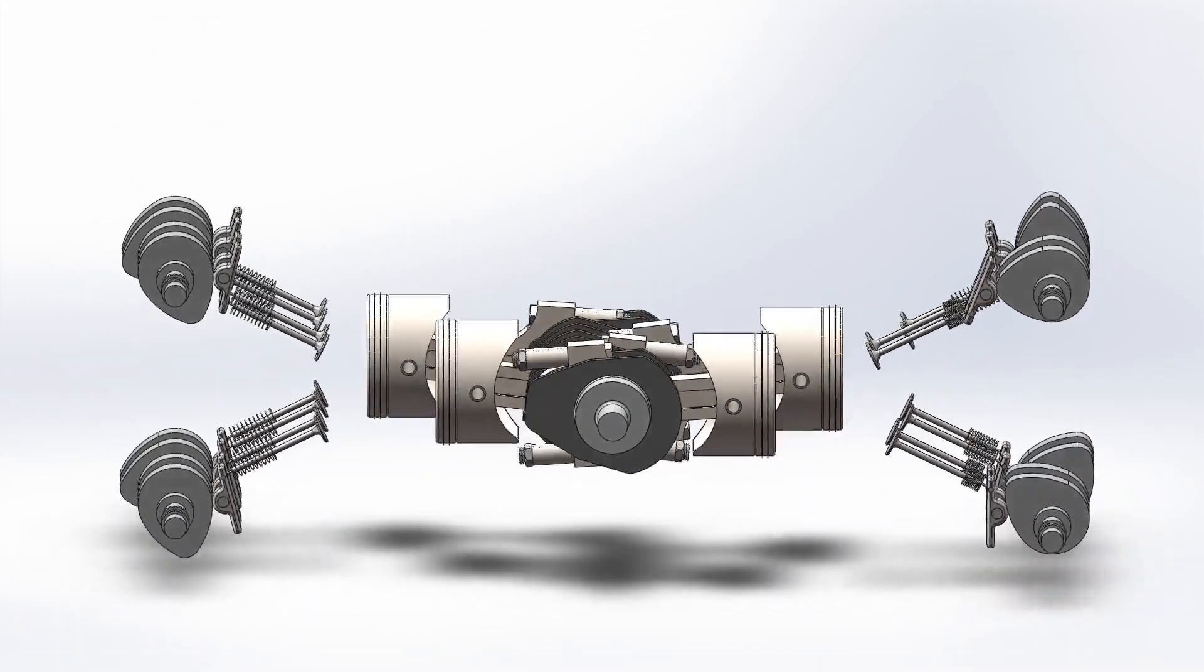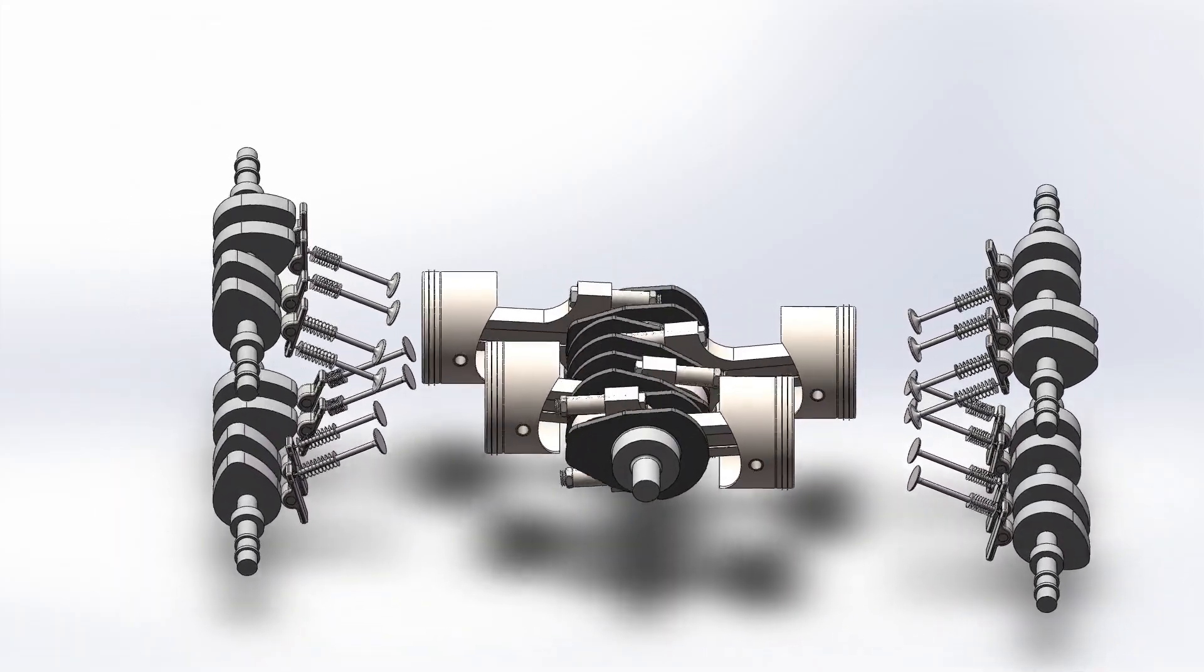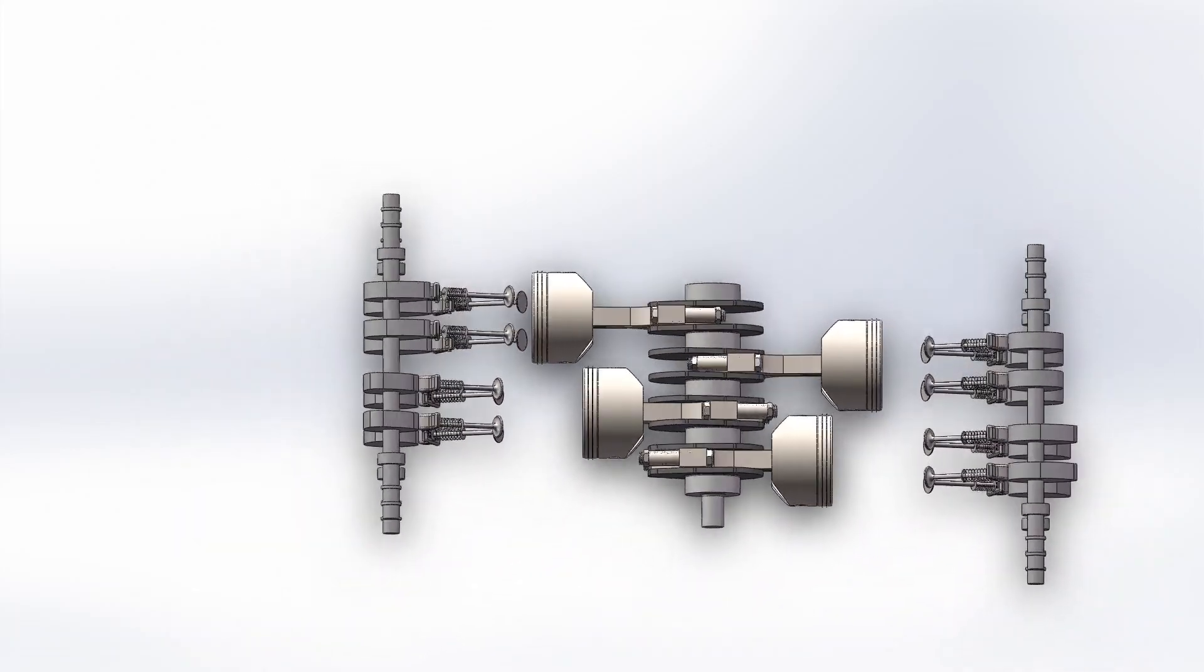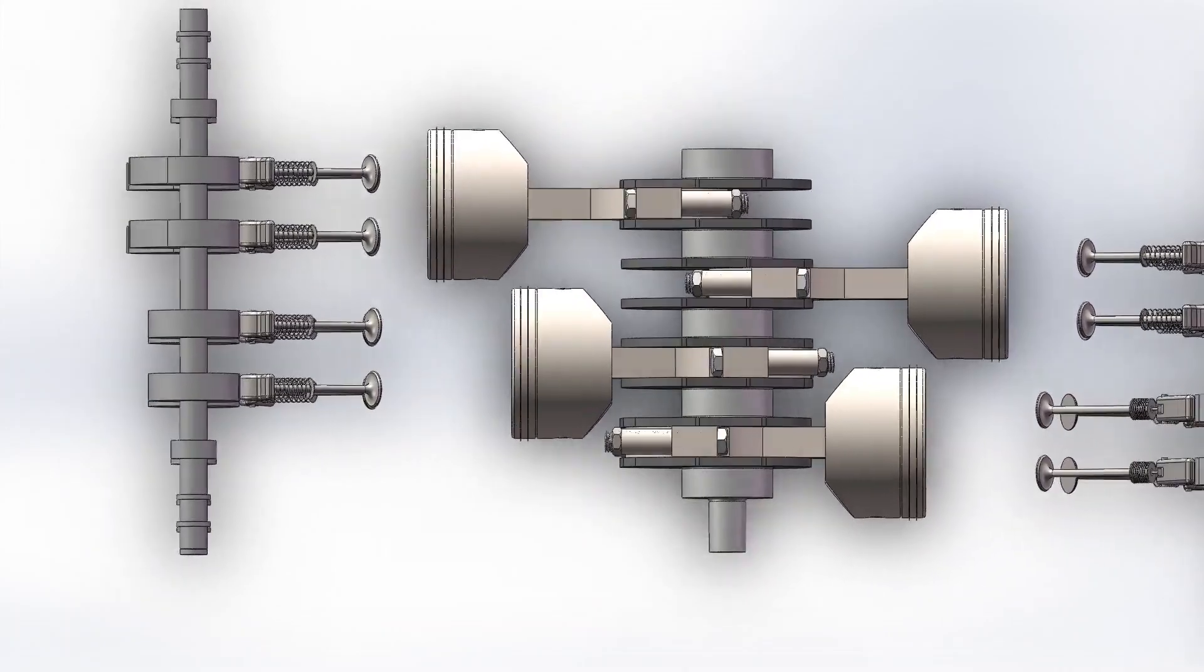This is a boxer engine, or a flat engine. Car manufacturers such as Porsche, BMW and Subaru manufacture and implement these machines into their vehicles. But how exactly does it work?